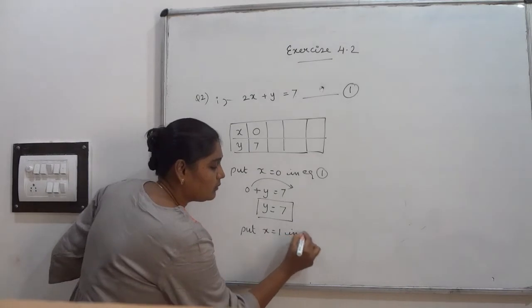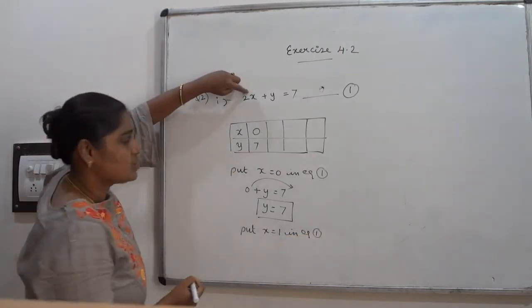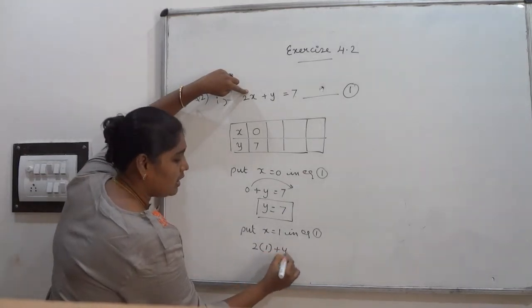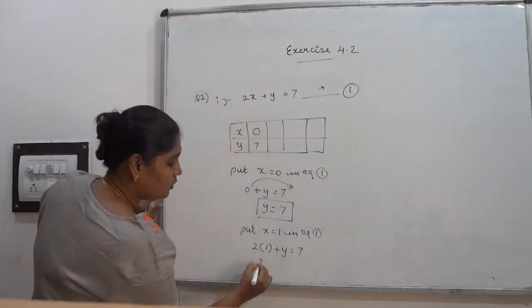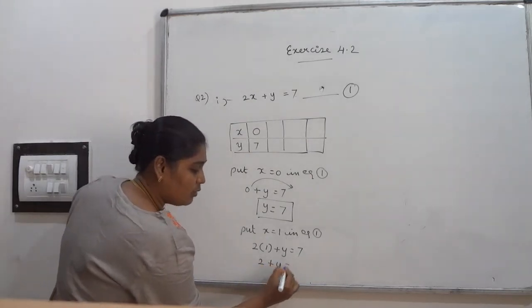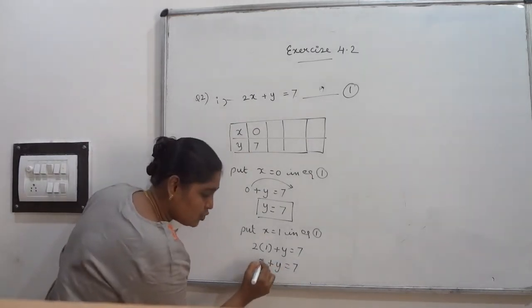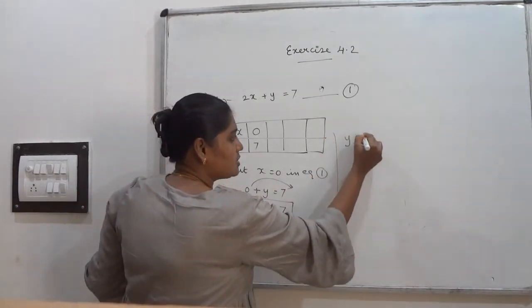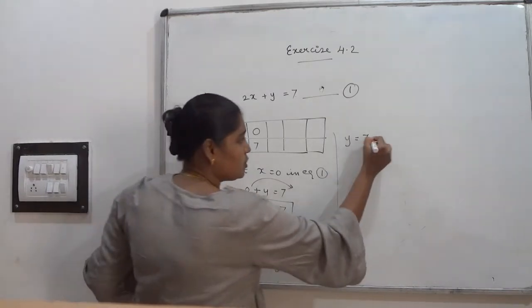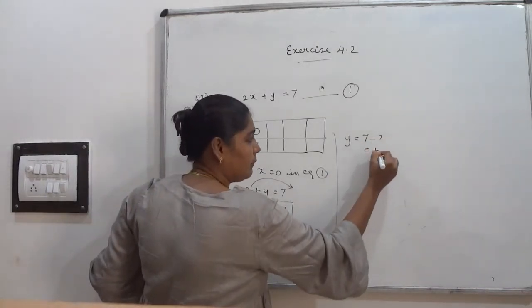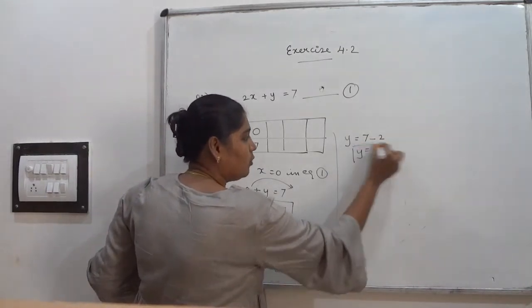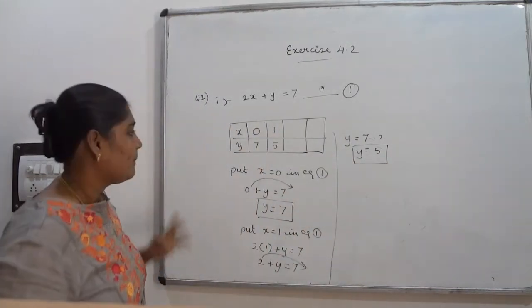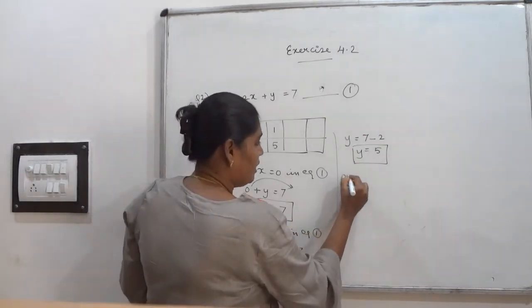Put x = 1 in equation number 1. Substituting: 2 × 1 = 2, so 2 + y = 7. Moving 2 to the other side: y = 7 − 2 = 5. When x = 1, y = 5.